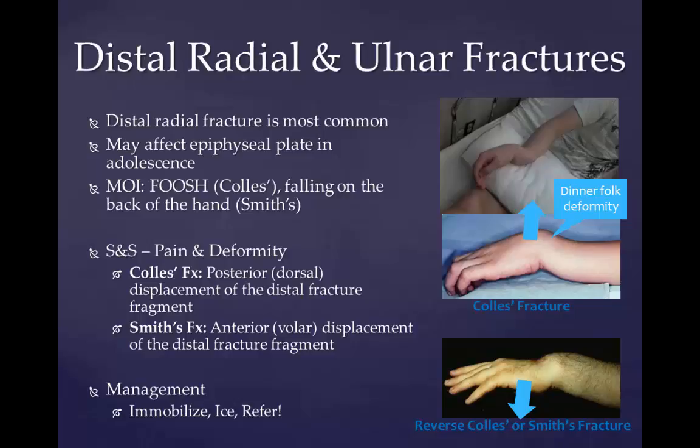Common mechanisms of injury include falling on an outstretched hand, or FOOSH, which is likely to result in a Colles fracture, or falling on the back of the hand with the wrist flexed, which is likely to result in a Smith fracture. General signs and symptoms include pain and deformity. A Colles fracture is a distal fracture of the radius with dorsal or posterior displacement of the wrist and hand. A dinner fork deformity is commonly seen.